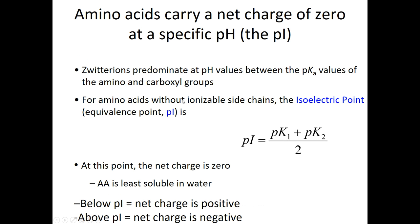Mathematically, you can calculate the pI without seeing the titration curve simply by adding the two pKas together and dividing by 2. It's also important to keep it straight in your mind that if you're below the pI, your net charge is going to be positive. If you're above the pI, then your net charge is typically going to be negative.